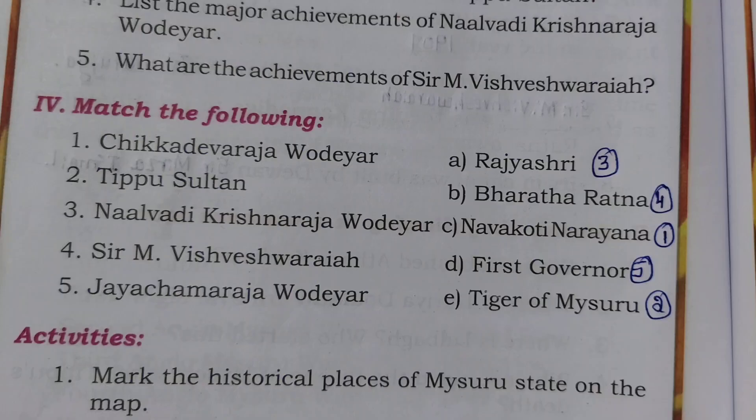Match the following. First: Chikadeva Raja Odeyar — Navakoti Narayana. Second: Tipu Sultan — Tiger of Mysore. Third: Nalwadi Krishna Raja Odeyar — Rajya Shri. Fourth: Sir M. Vishweshwarya — Bharat Ratna. Fifth: Jaya Chama Raja Odeyar — First Governor.